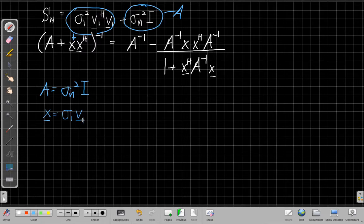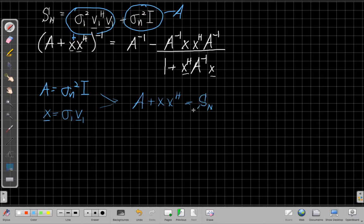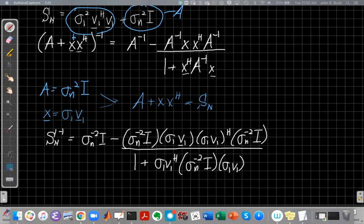Now I have these equations here, I can use this to plug into this equation to get something for Sn. If I do this, if I put all this together, then A plus X, X Hermitian is equal to the spatial covariance S of N. So I can use this inverse formula to find S of N inverse. This A inverse becomes the inverse of this, which is just sigma N to the minus 2 I, and the scalar gets flipped. So that plugs in also here and here for these A inverses, and then I just plug in X's, sigma 1 V1, and sigma 1 V1 Hermitian.